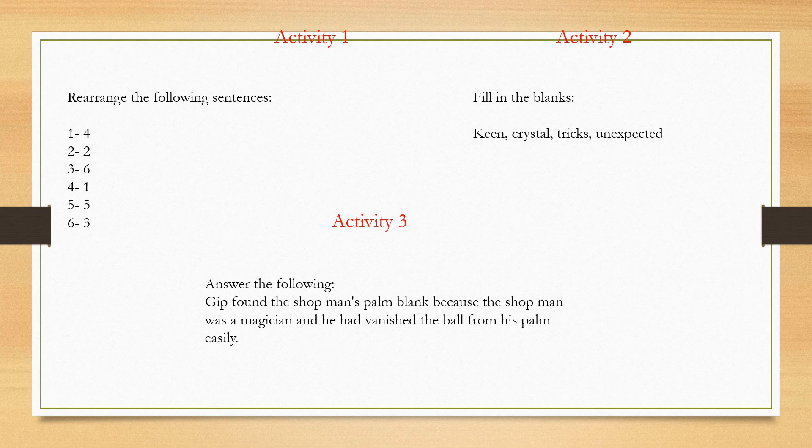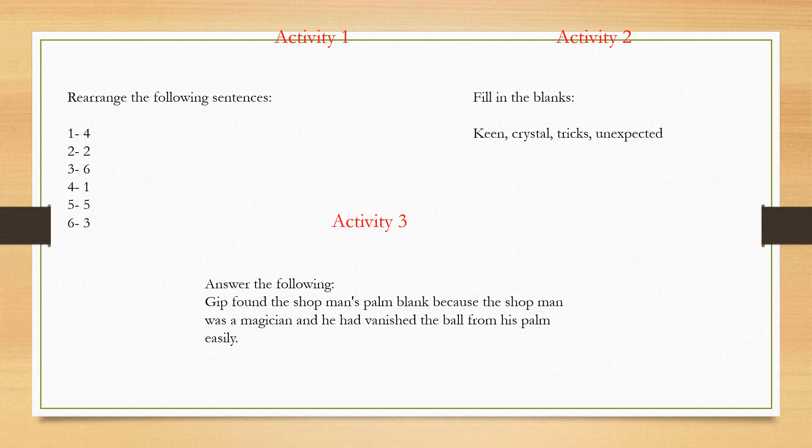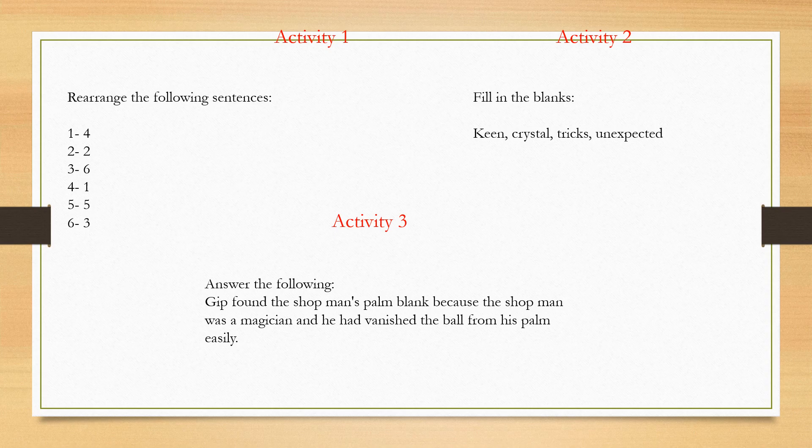Activity 2: Fill in the blanks using words from the help box. Jib was keen to enter the magic shop. The shop had many crystal balls. Jib's father wanted to buy some tricks for his son. The shopman performed an unexpected action.